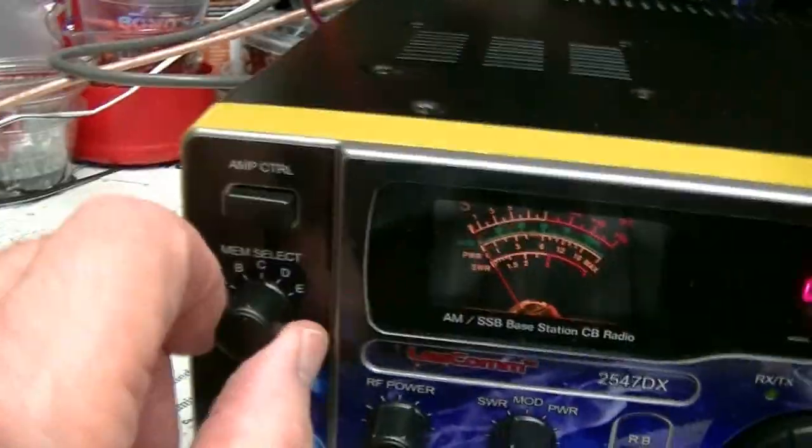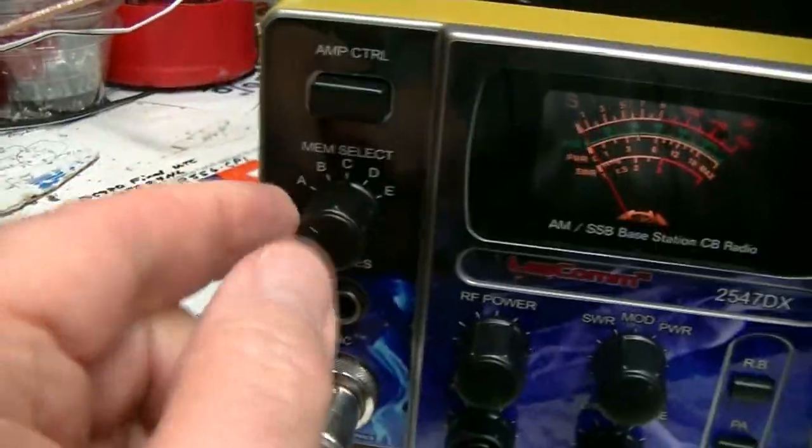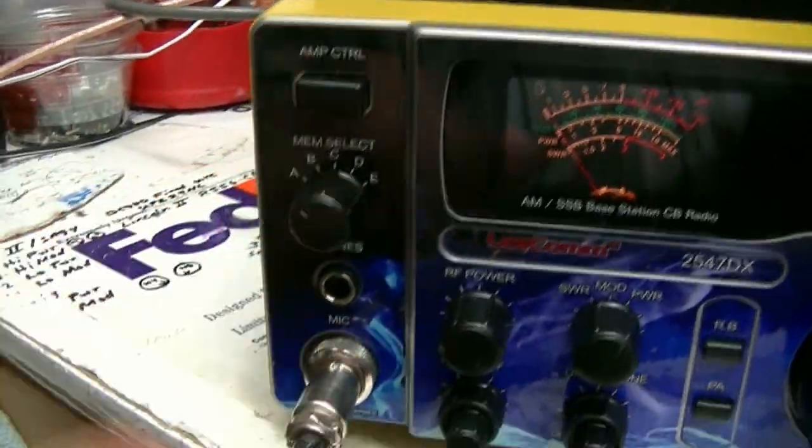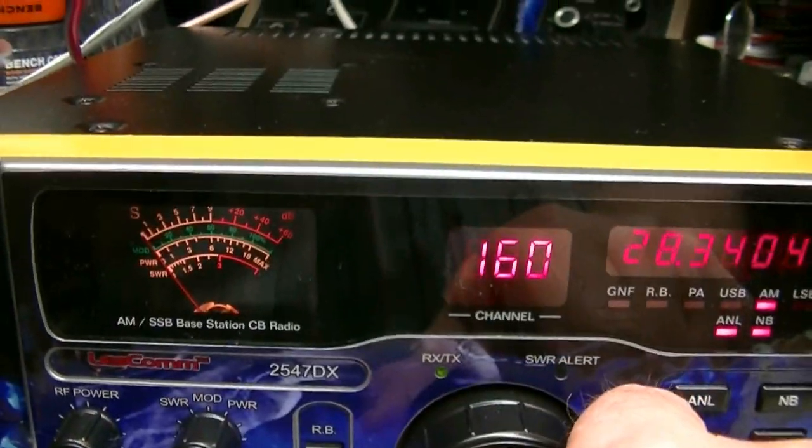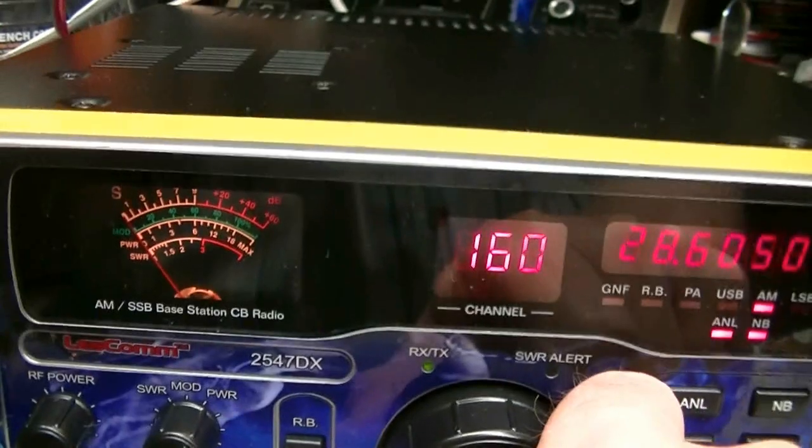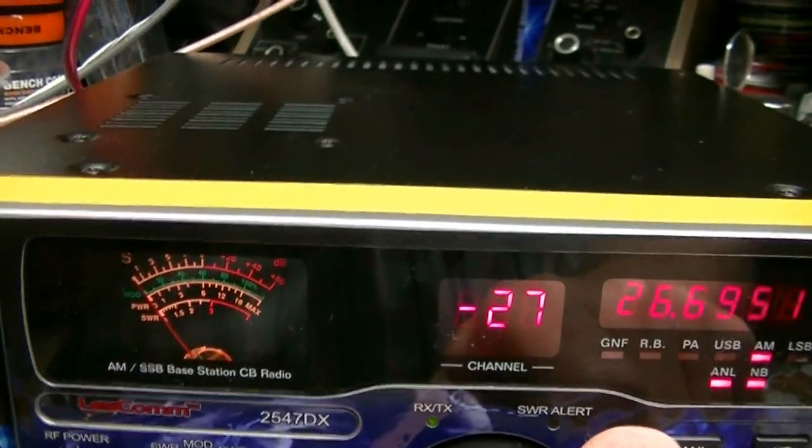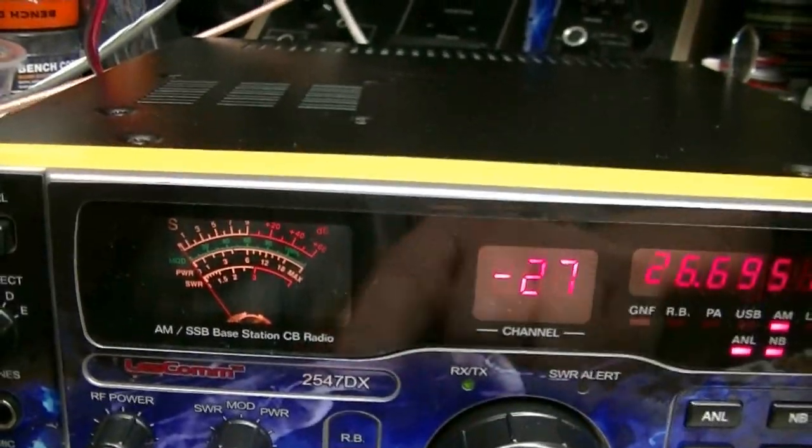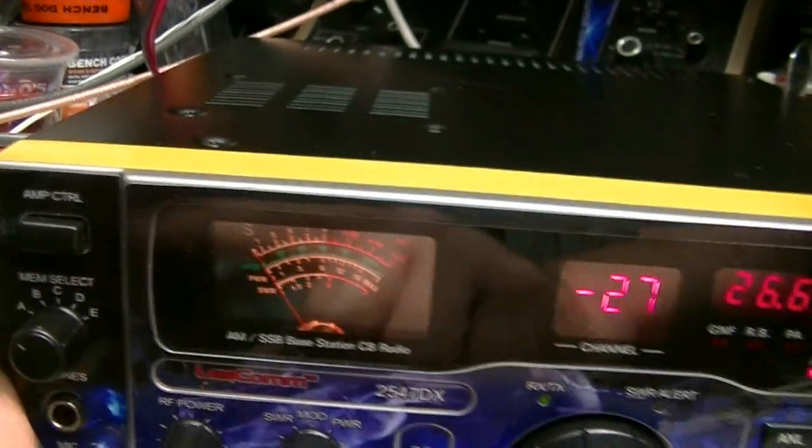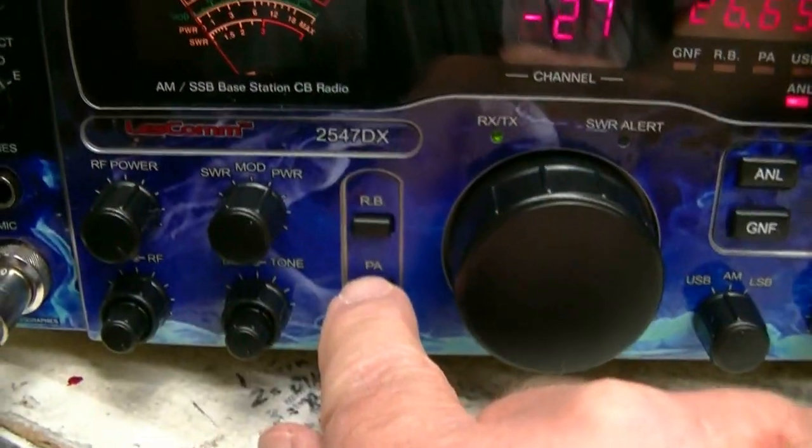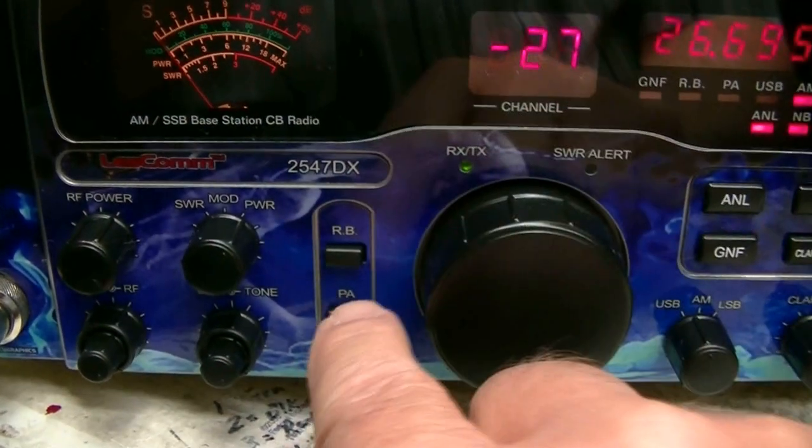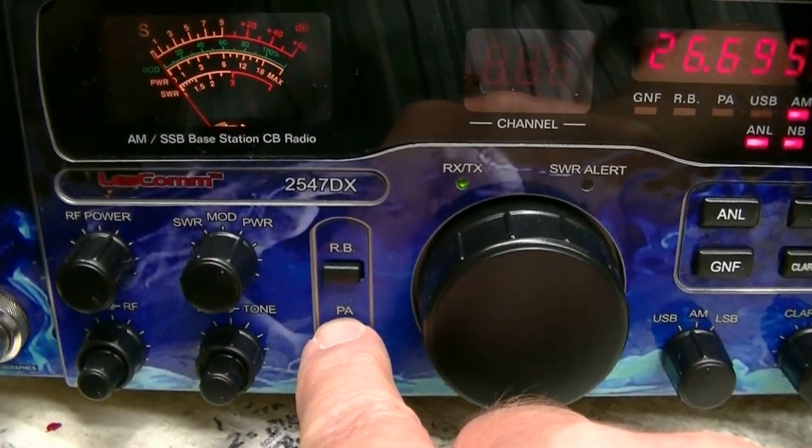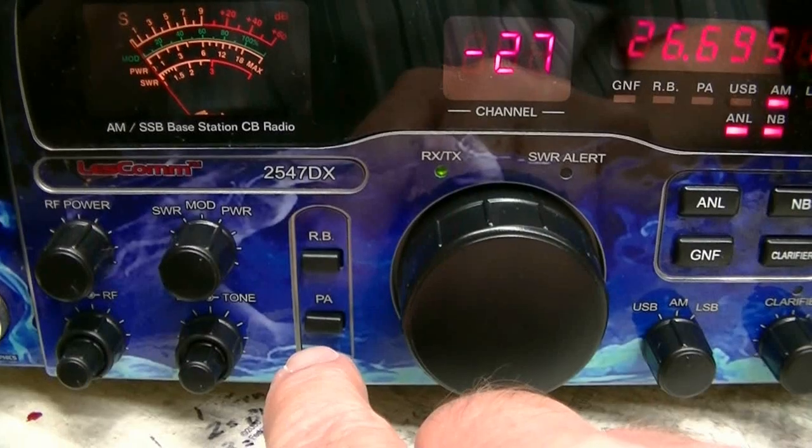For memory, you got five memory channels. I'm on channel A. Let's say we want to go down to the lowest channel right there. We want to save that one in position A. You just come down here, push in the PA button. You see that display go away? That means it saved it.